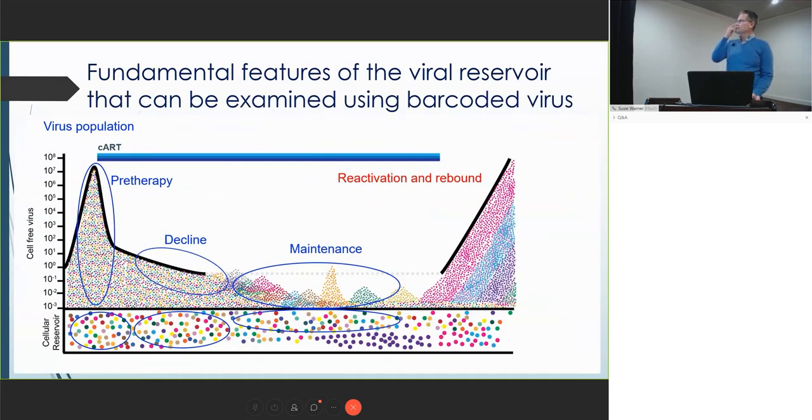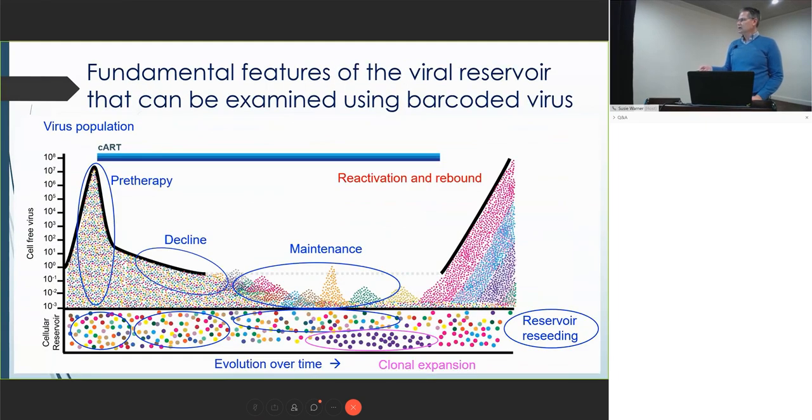Some of the fundamental features that we're looking at besides reactivation and rebound is the pre-therapy population, its dynamics during primary infection and during the decline phase, the changes in the population as ART is initiated. The maintenance phase, including blips, virus that would be very challenging to sequence otherwise. We can look at both the cellular compartment and the cell-free compartment. We can look at the evolution over time, clonal expansion, and finally, the reservoir reseeding. When you have an ATI, what happens to the cellular reservoir during this ATI with high resolution?